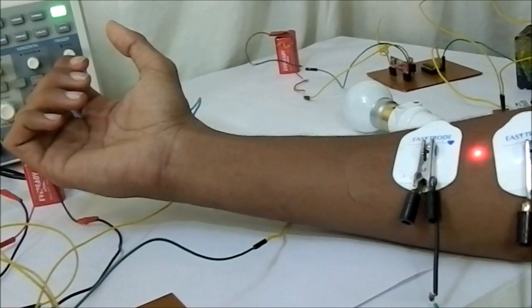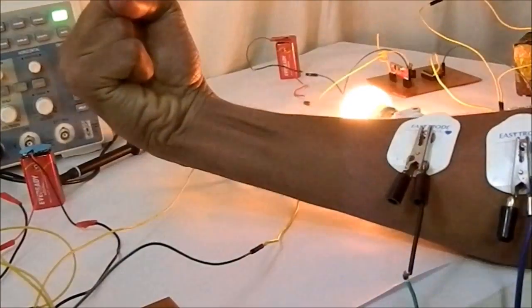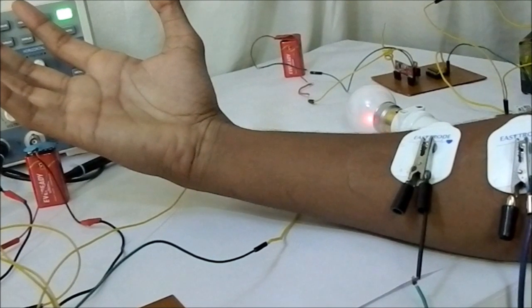Here comes the automation part. When the muscle is stressed, the bulb goes to the ON state, and when the muscle is relaxed, the bulb goes to the OFF state.